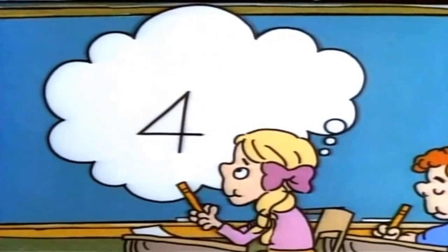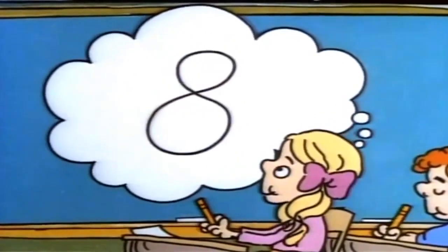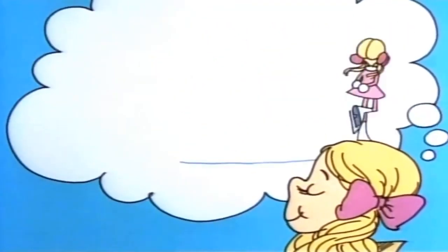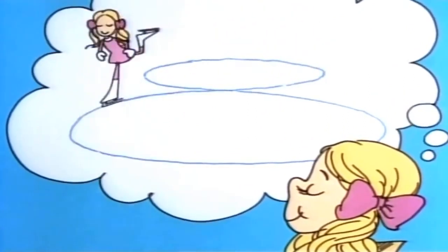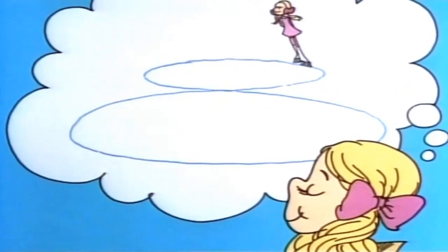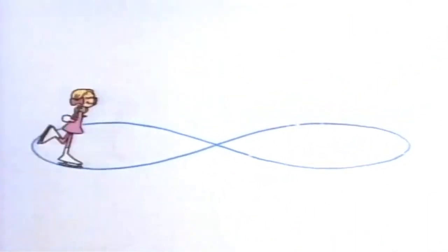Figure four as half of eight. If you skate you would be great if you could make a figure eight. That's a circle that turns round upon itself. Place it on its side and it's a symbol meaning infinity.